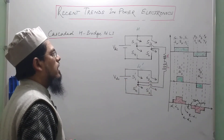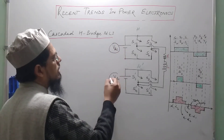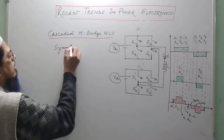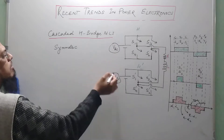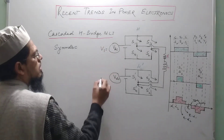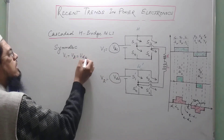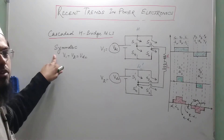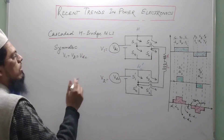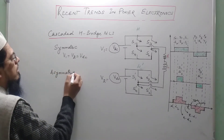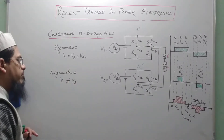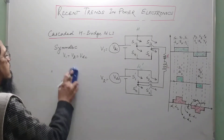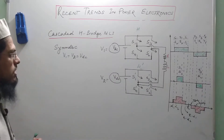Depending on the value of the DC supply used, this configuration is called either symmetric — if the two DC supplies are the same, say V1 equals V2 equals V_DC — then we call it a symmetric cascaded H-bridge configuration. While if V1 and V2 are not the same, we call it asymmetric. We will discuss the advantages and shortcomings of symmetric and asymmetric configurations shortly. Let us start with the symmetric configuration in which the two DC supplies are equal.